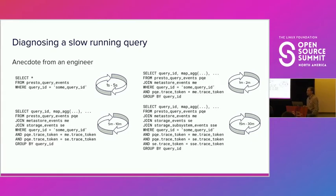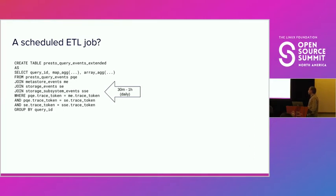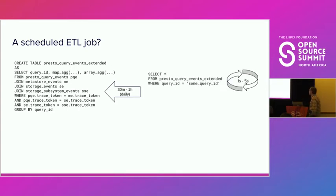It was not easy to iterate fast when your query runs for 15 minutes. What we usually ended up doing was creating a scheduled ETL job that ran once a day or once an hour depending on data freshness. This job joined all these datasets and created a single table with all events grouped by query ID, allowing us to query the extended dataset with the same latency of a couple of seconds.